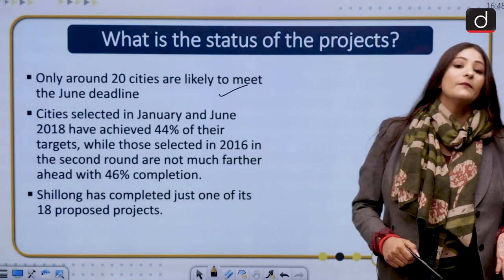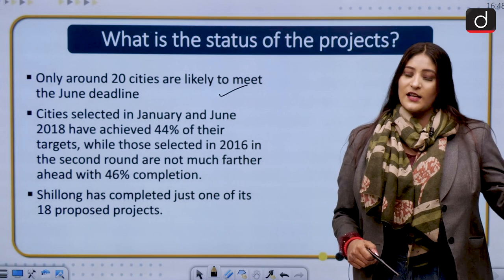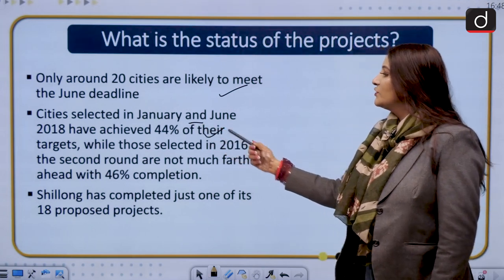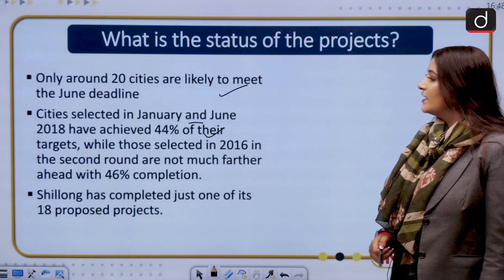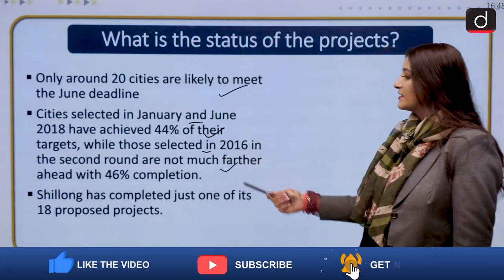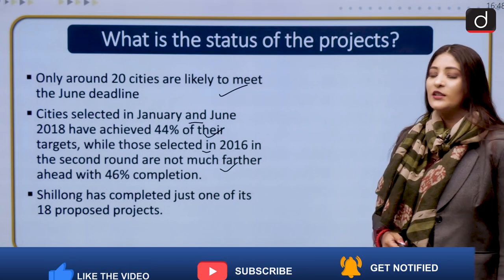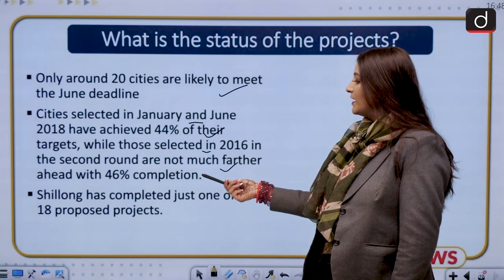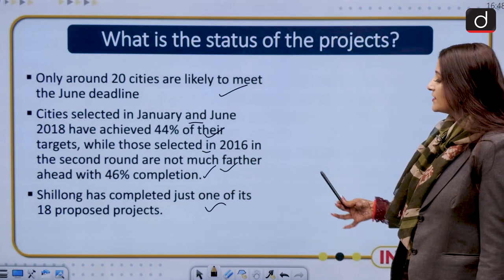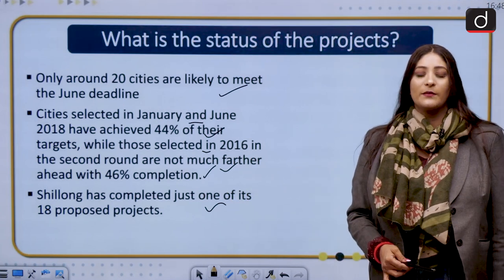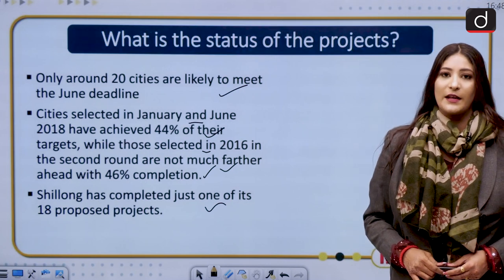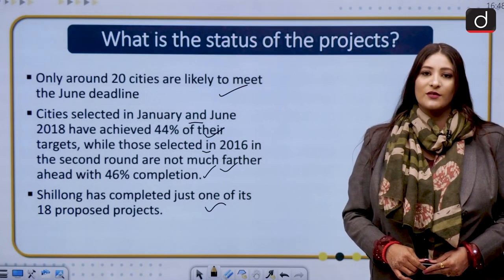If we talk about the cities selected from 2015 — those selected in January and June 2018 — they have achieved 44 percent of their targets, while those selected in the second round of 2016 are not much farther ahead at 46 percent completion. Shillong has completed just one of its 18 proposed projects. That's it — thank you so much for watching.